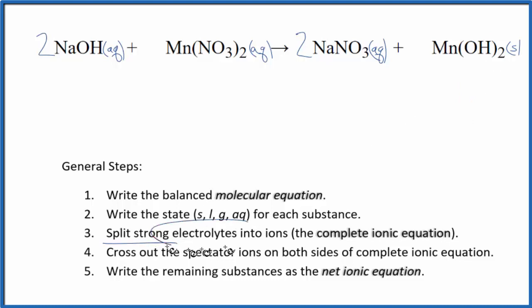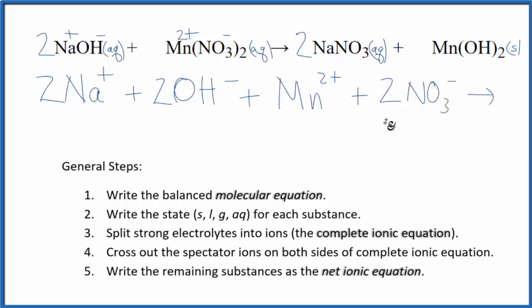Now we can split the strong electrolytes into ions for the complete ionic equation. Sodium is in group 1 on the periodic table, has a 1 plus charge. And this whole hydroxide, that's always 1 minus. I have two sodium ions. And I won't write the states now, I'll do that at the end. Plus two hydroxide ions. And then manganese is a transition metal, so we need to look at what it's bonded to to figure its charge out. Nitrate is always 1 minus, we have two of them. Manganese has to be 2 plus. So we have our manganese 2+ ion and then 2 nitrate ions.